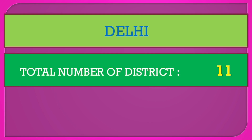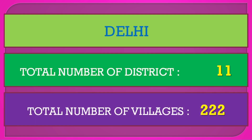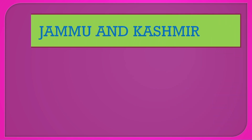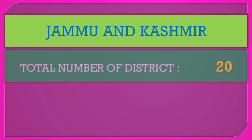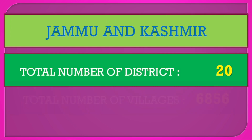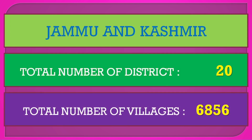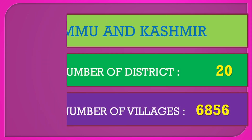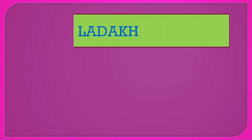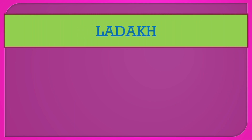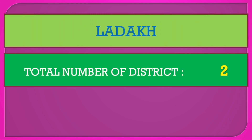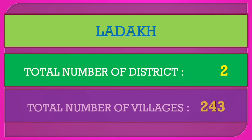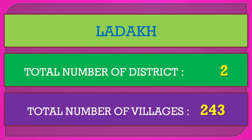Delhi: total number of districts 11, total number of villages 222. Jammu and Kashmir: total number of districts 20, total number of villages 6,856. Ladakh: total number of districts 2, total number of villages 243.